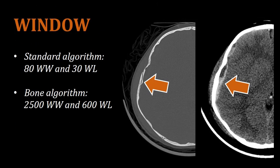It's also important that we represent these images correctly with the right window width and window level. Standard algorithm images should have an 80 window width and a 30 window level. The 80 window width provides increased contrast because it is a narrow window, and the 30 window level corresponds approximately to the Hounsfield units of brain tissue. Bone algorithm images should be displayed with a much larger window width of 2500, and a window level of approximately 600, which corresponds to the Hounsfield units of bone.